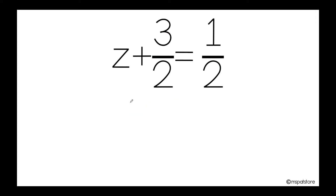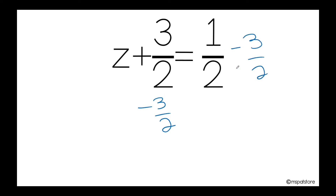Now let's take a look at this example. So I have z plus 3 halves is equals to one half. Remember, you need to isolate your variable. In this case, this intruder is adding, so the inverse operation of addition is subtraction. So I'll subtract 3 halves here and also on the other side of the equation.